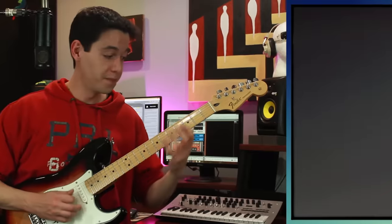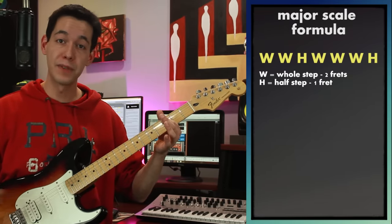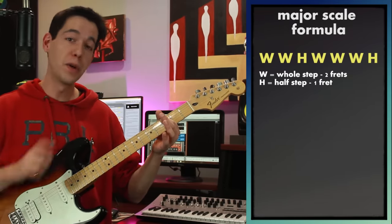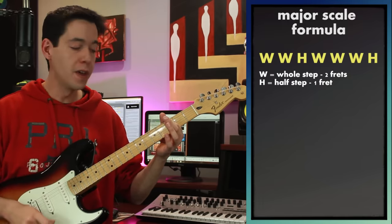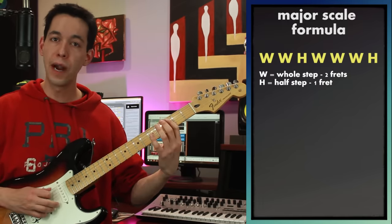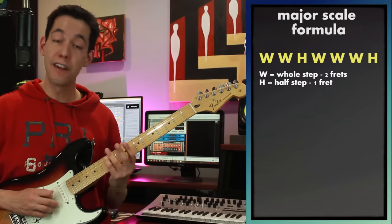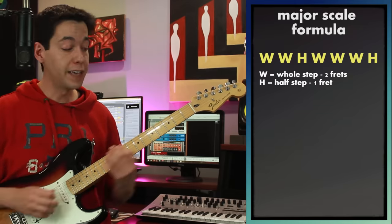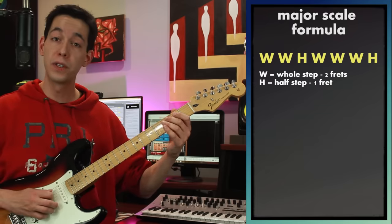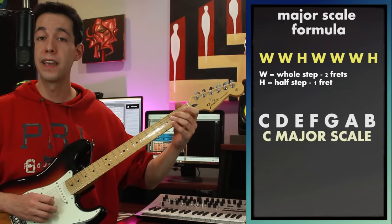To do that, we need to start on the note C. From there, we have a formula of whole steps and half steps that will build us any major scale. It goes whole, whole, half, whole, whole, whole, half. A whole step is two frets and a half step is one fret. If I do that sequence, it gives me my C major scale and these notes: C, D, E, F, G, A, B, C.